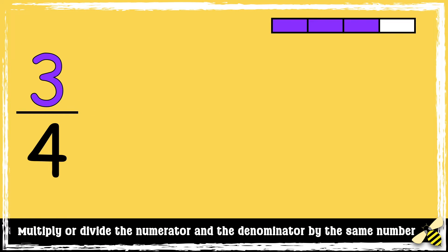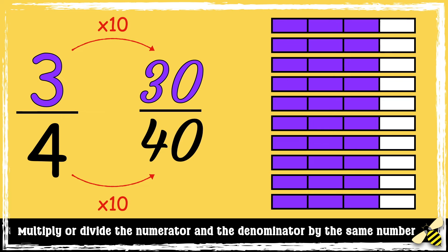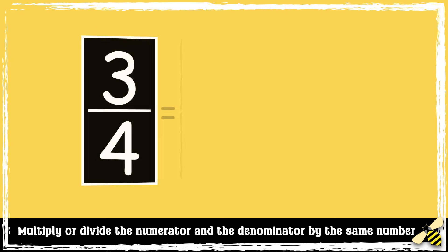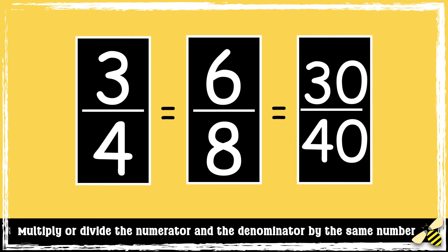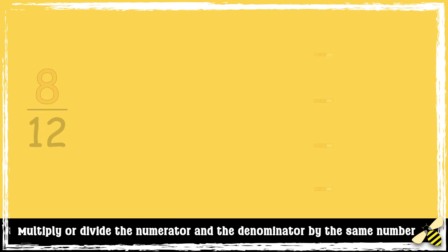Let's go back to 3/4, but this time I'm going to multiply the numerator and the denominator by 10. So 3 times 10 is 30, and 4 times 10 is 40 — so 3/4 is also equivalent to 30/40.